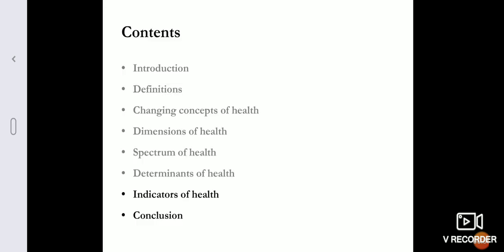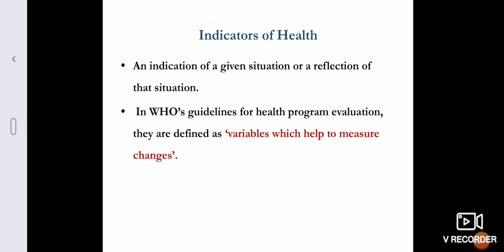Good morning dear students. Today we will continue with the balance part of our health, that is indicators of health. So what is an indicator? It is the one which gives an indication of any given situation or a reflection of that situation. WHO, that is World Health Organization, defines indicator as a variable which will help us in measuring the change.